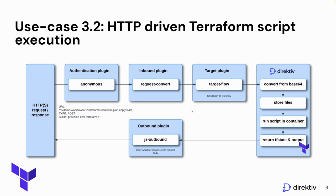The flow is: first we bypass the authentication plugin, then we use the request convert plugin to copy all of the headers of this request into the body of the workflow, because we want to use the query parameters in the workflow. Then we send it off to a target workflow, which takes the body object — the Terraform script — stored as base64, and we convert that base64 into an internal variable stored in Directive, then create a file for the Terraform script.